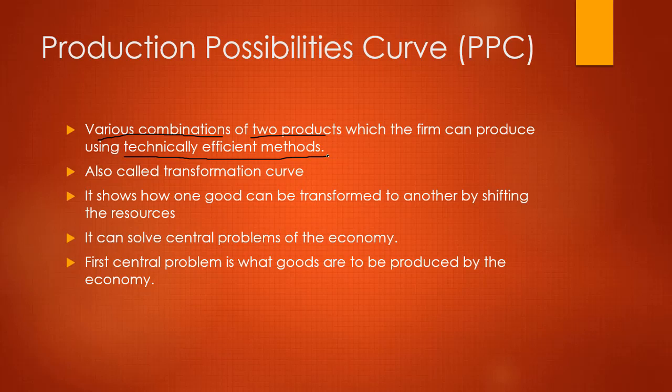For example, a developing country like India has two types of goods: capital goods and consumer goods. A developing country like India doesn't have that much capital, so to increase capital they have to produce more capital goods. In the production possibility curve for India, capital goods would be plotted more and consumer goods would obviously be less.